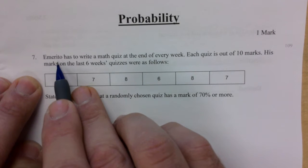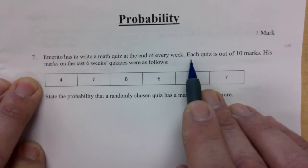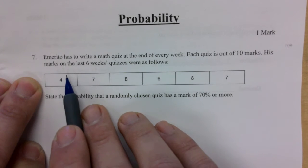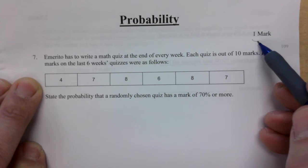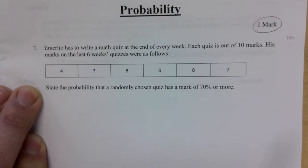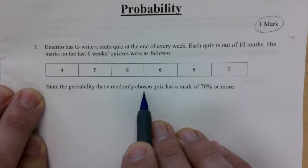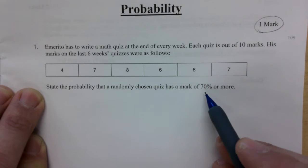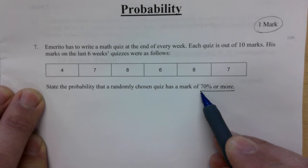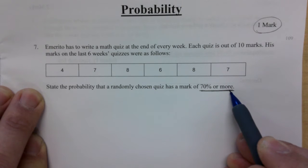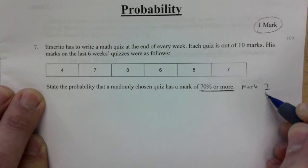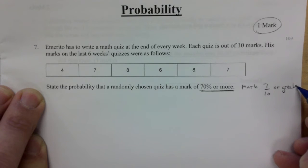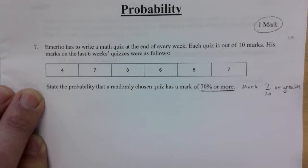Emerito has to write a math quiz at the end of every week. Each quiz is out of 10, his marks on the last six weeks' quizzes were as follows. State the probability that a randomly chosen quiz has a mark of 70% or more. So we're looking for a mark that is seven out of 10 or more, or greater.